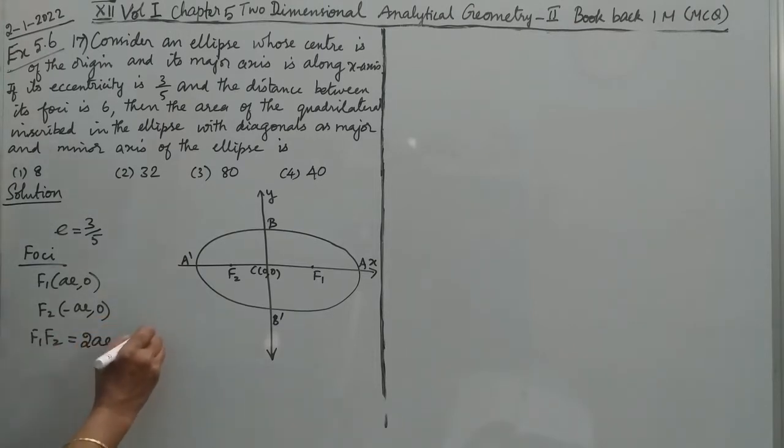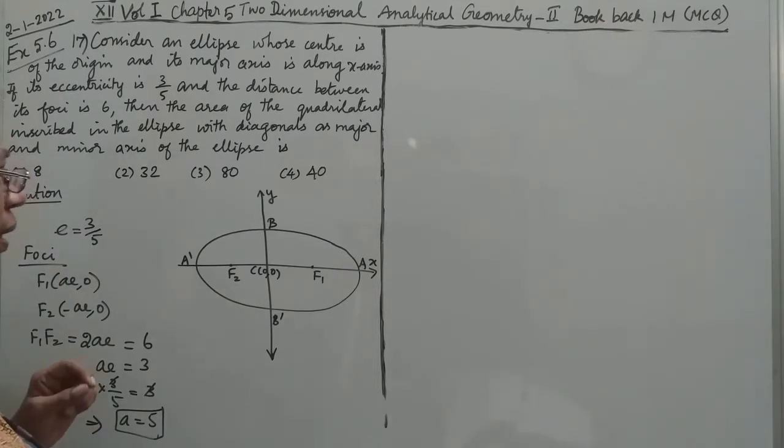So 2ae = 6, which means ae = 3. From this, with e = 3/5, we get A × 3/5 = 3, so A = 5. Now we know e and A, now we need to find B.